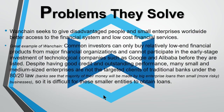So what problems is Wanchain trying to solve? They seek to give disadvantaged people and small enterprises worldwide better access to financial systems and low-cost financial services. They give a great example in their white paper: common investors can only buy relatively low-end financial products from major financial organizations and cannot participate in early-stage investment of technology companies such as Google or Alibaba before they are listed. Basically, the huge companies like Apple, Google, and Microsoft — us small people can't get in on that.